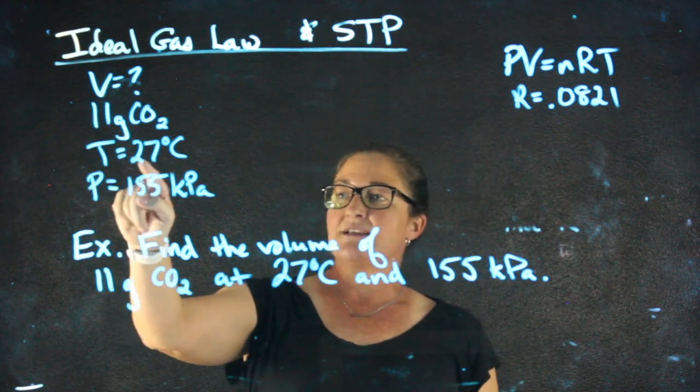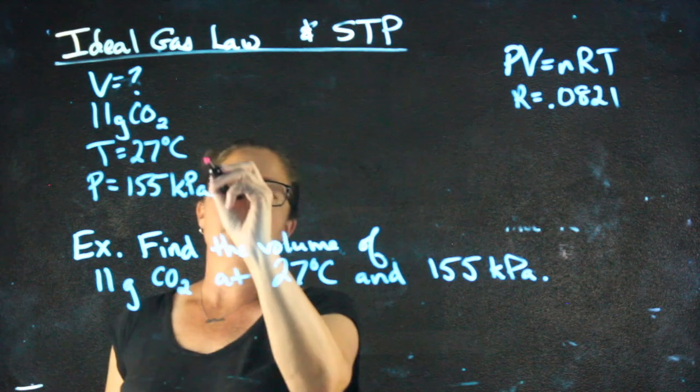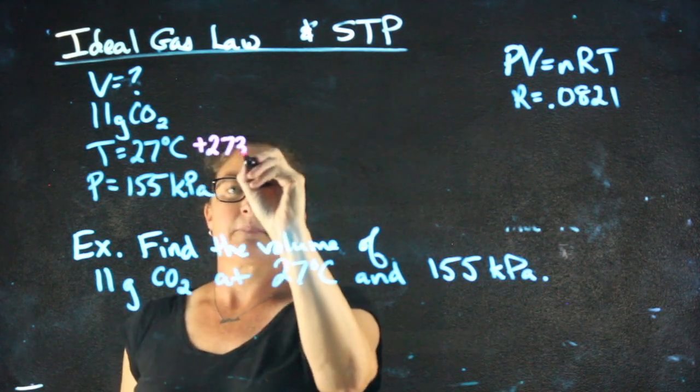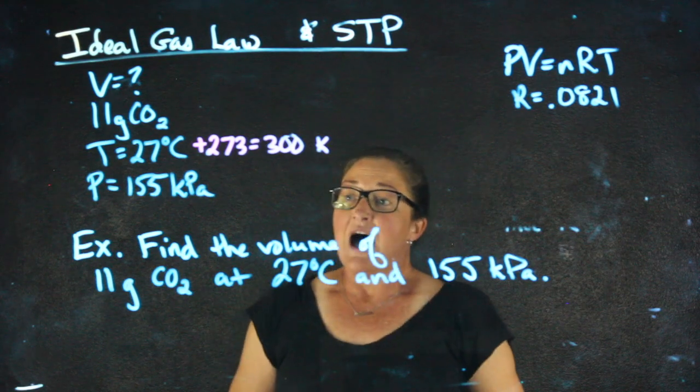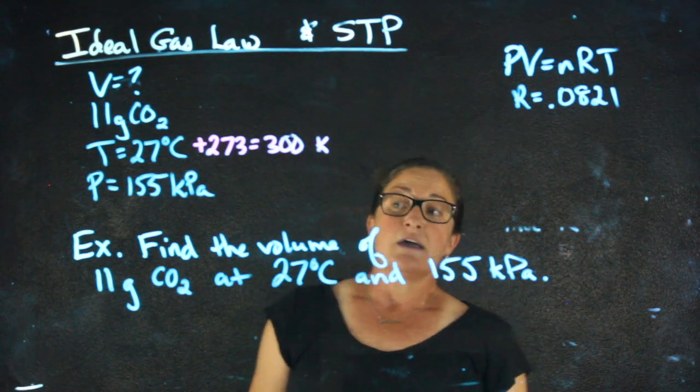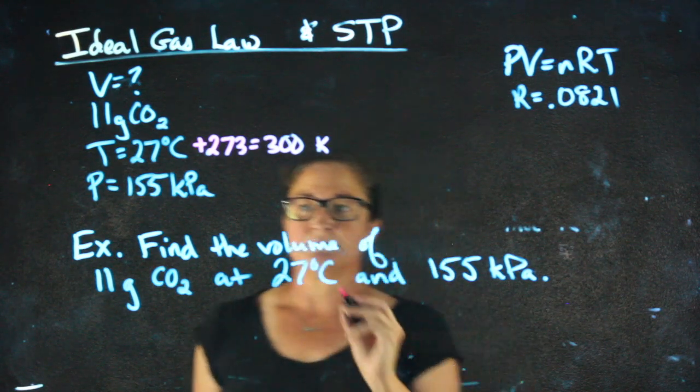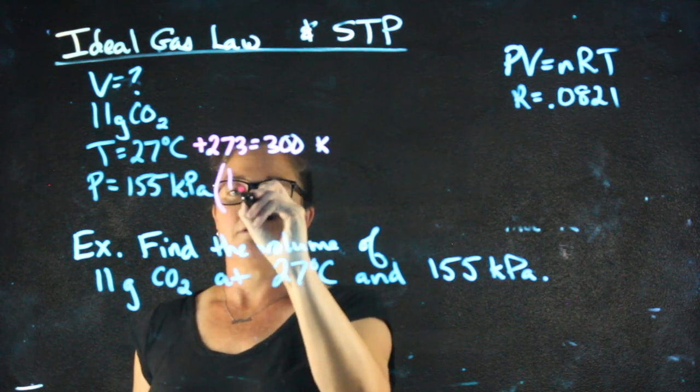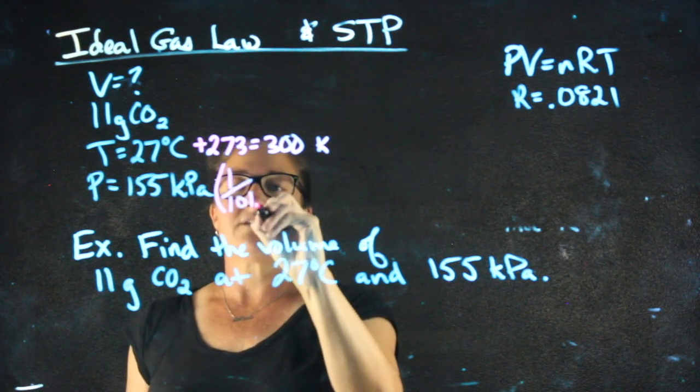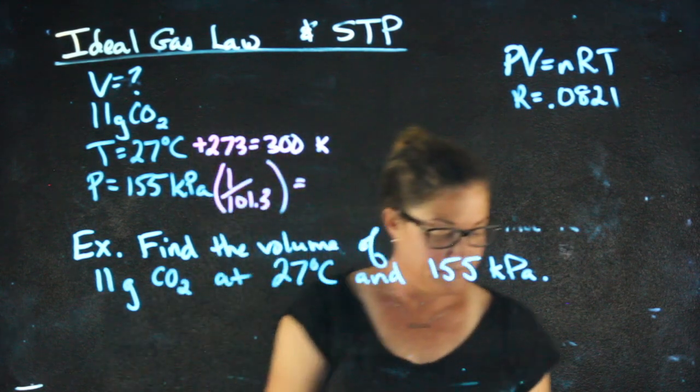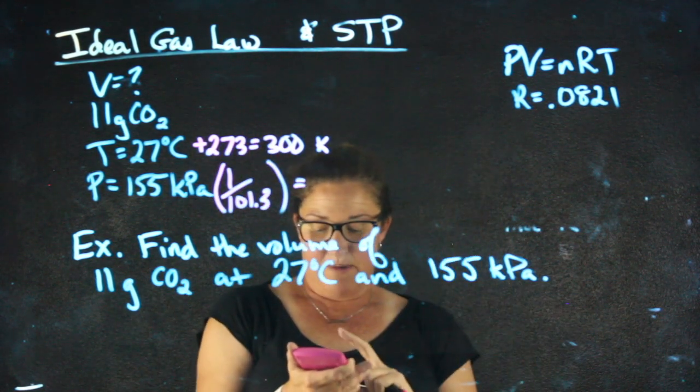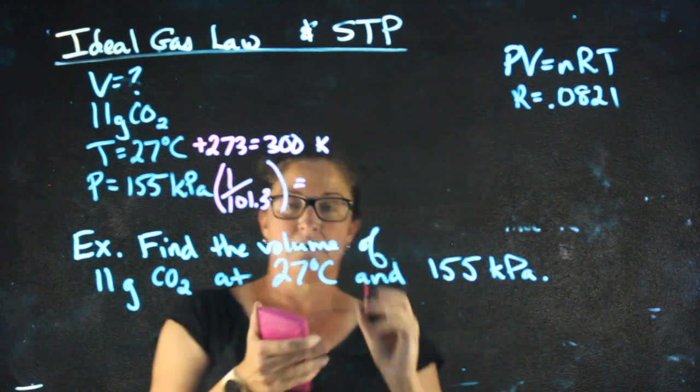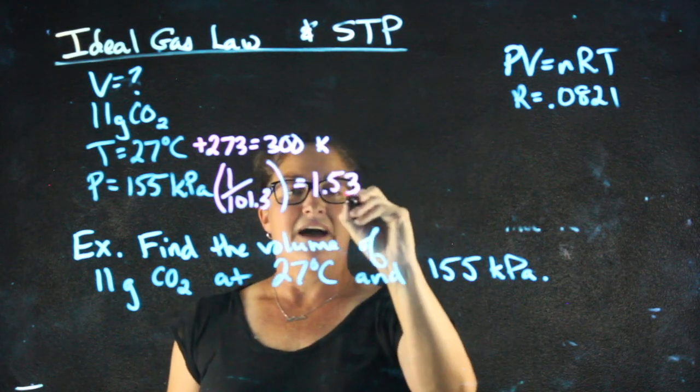Volume, don't worry about it yet. Temperature is 27. That needs to be converted to Kelvin, which will be 300 Kelvin. 155 kPa needs to be converted to ATM. So converting that to ATM, we're going to divide by 101.3. 155 divided by 101.3 gives me 1.53 ATM.